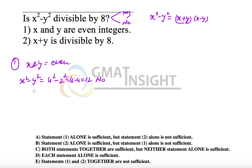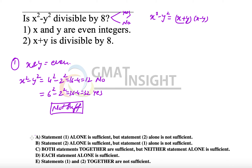If x=6 and y=2, then 6² - 2² = 32, which is divisible by 8. So the answer is sometimes yes and sometimes no — the first statement alone is not sufficient, and we can eliminate options A and D. The second statement says x+y is divisible by 8.